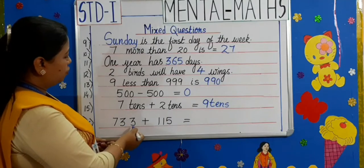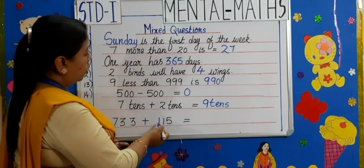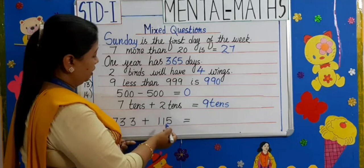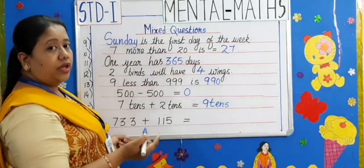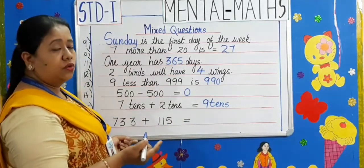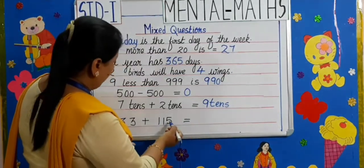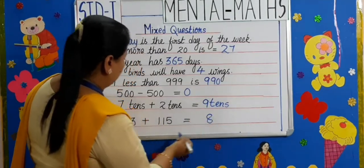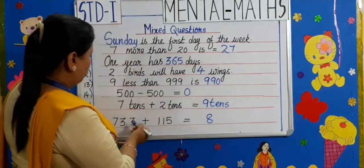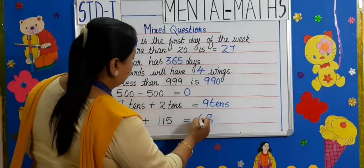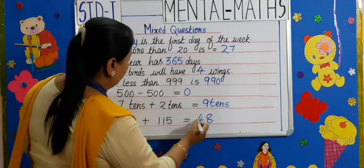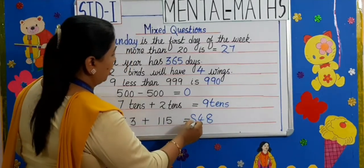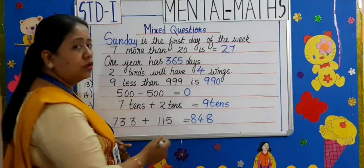Moving on to the last one: 733 plus 115. Let's do ones first. 5 plus 3 is 8, 1 plus 3 is 4, 1 plus 7 is 8. The answer is 848.